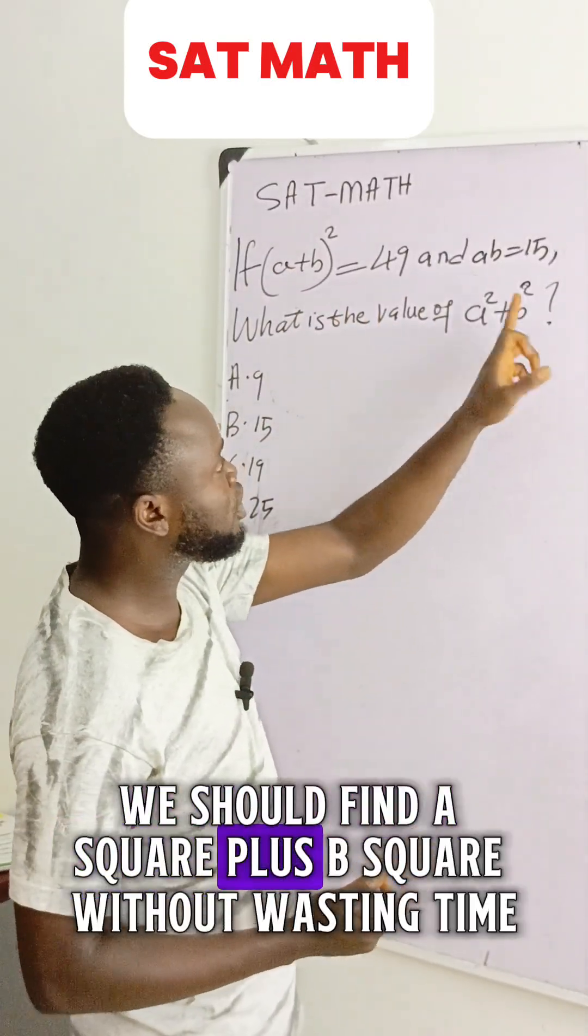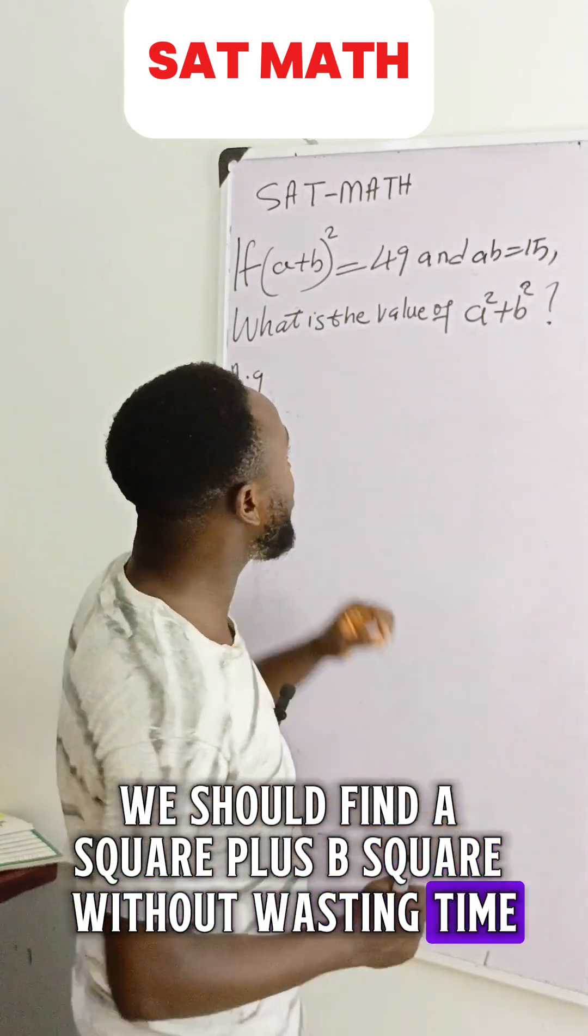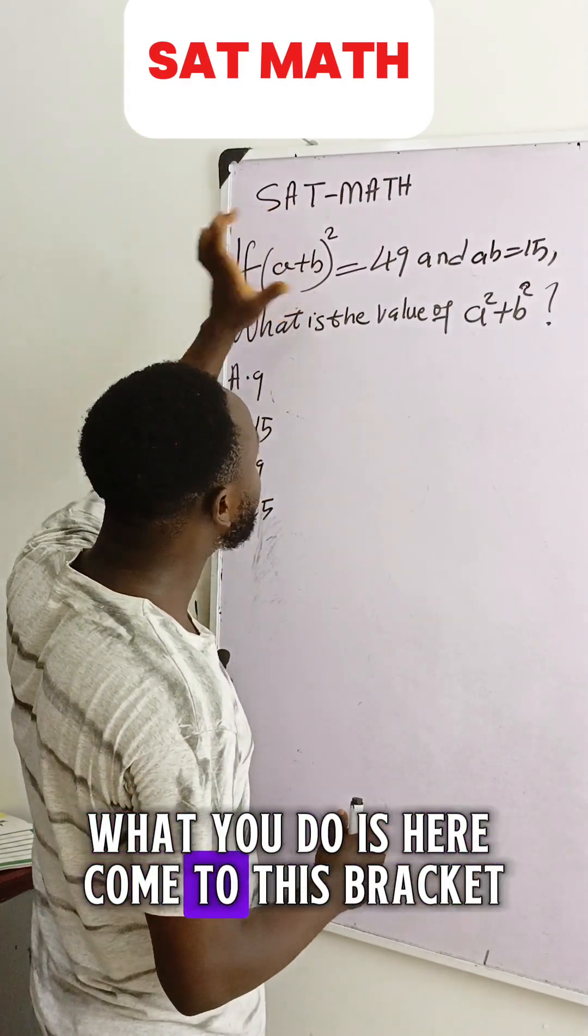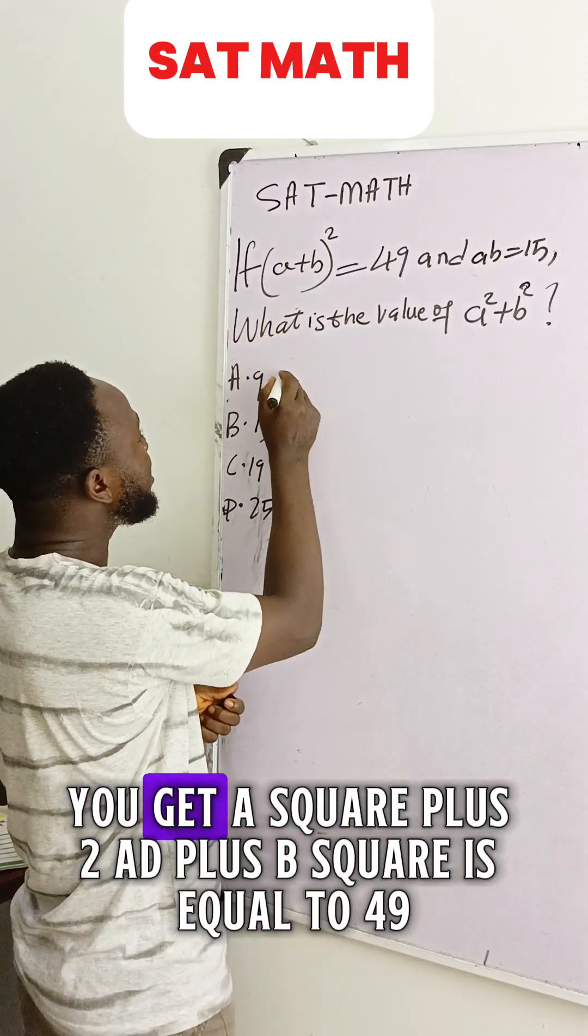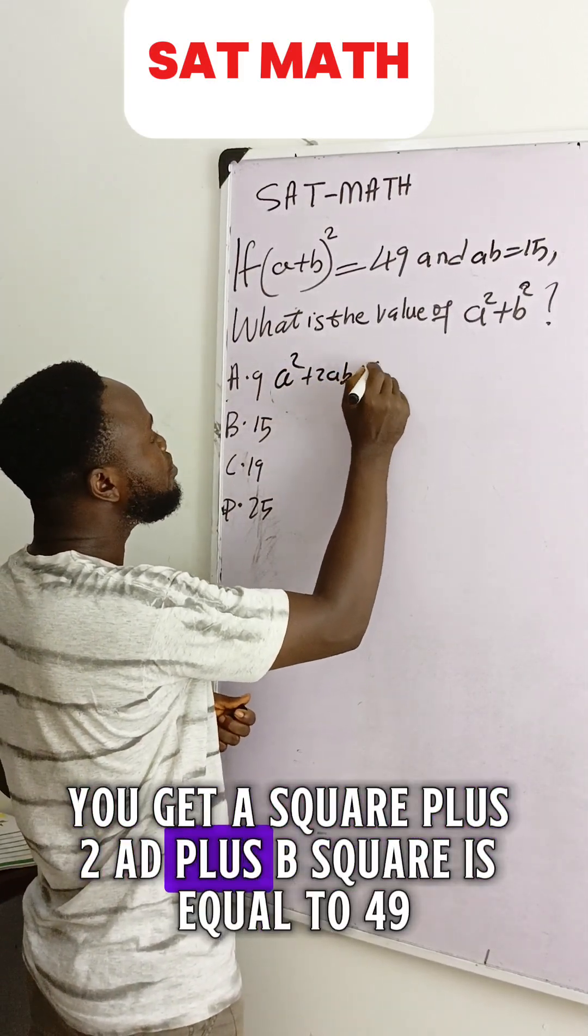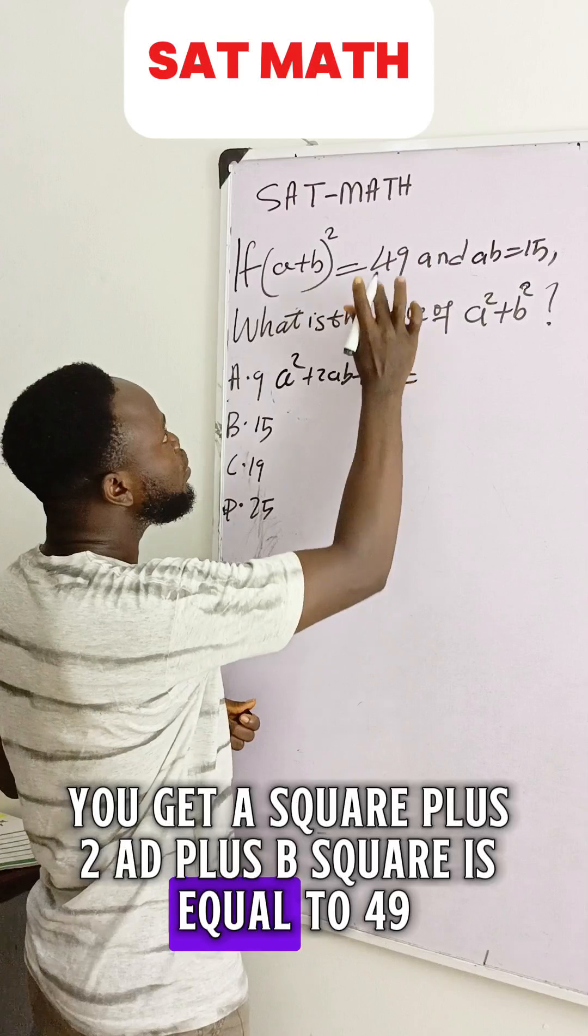We should find a squared plus b squared. Without wasting time, what you do is come to this bracket and expand the bracket. If you expand this bracket, you get a squared plus 2ab plus b squared is equal to 49.